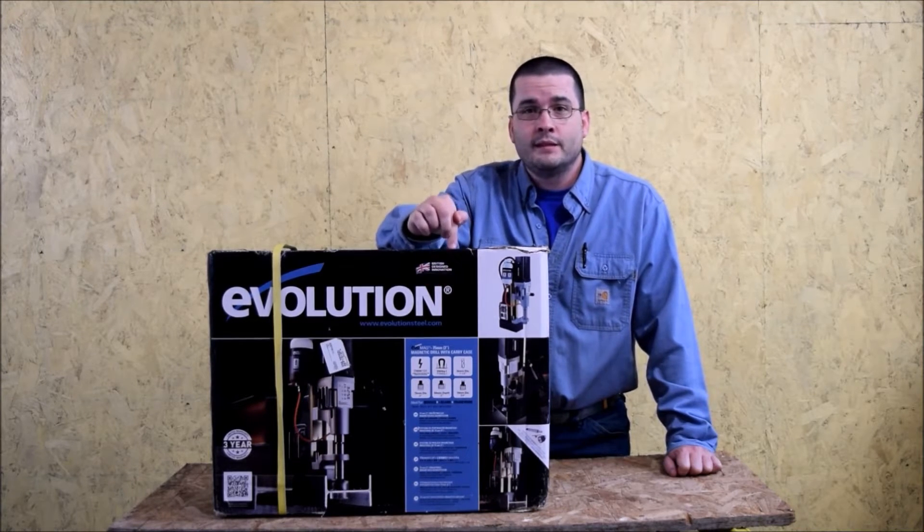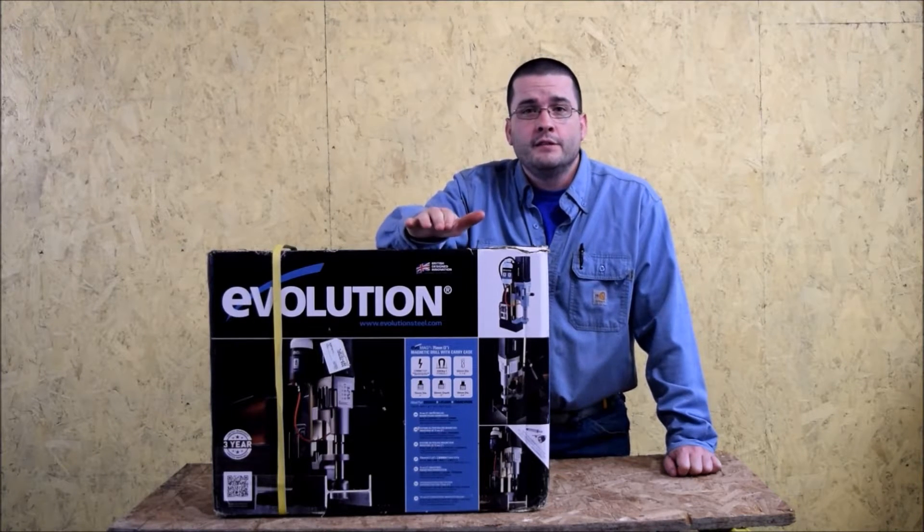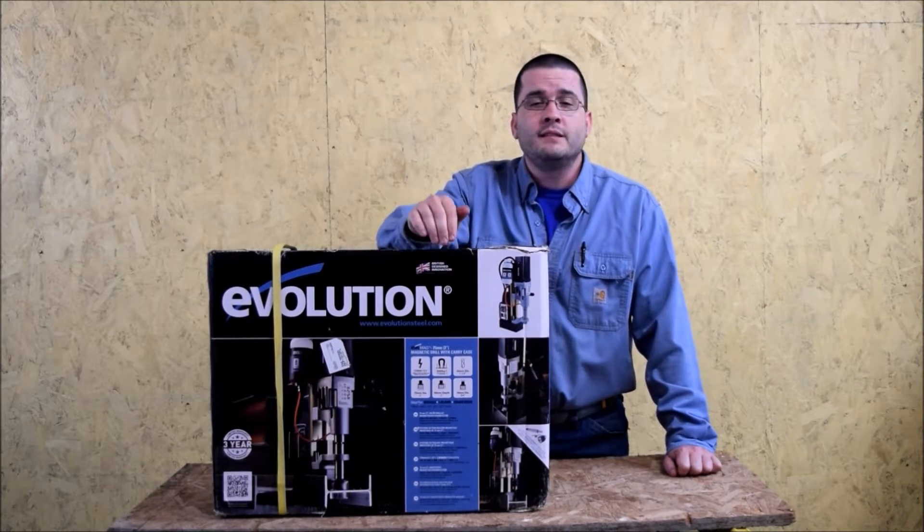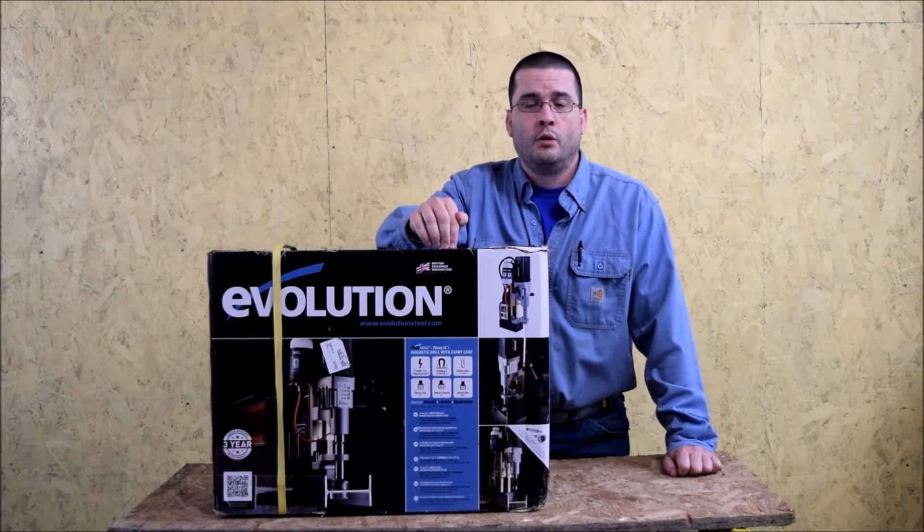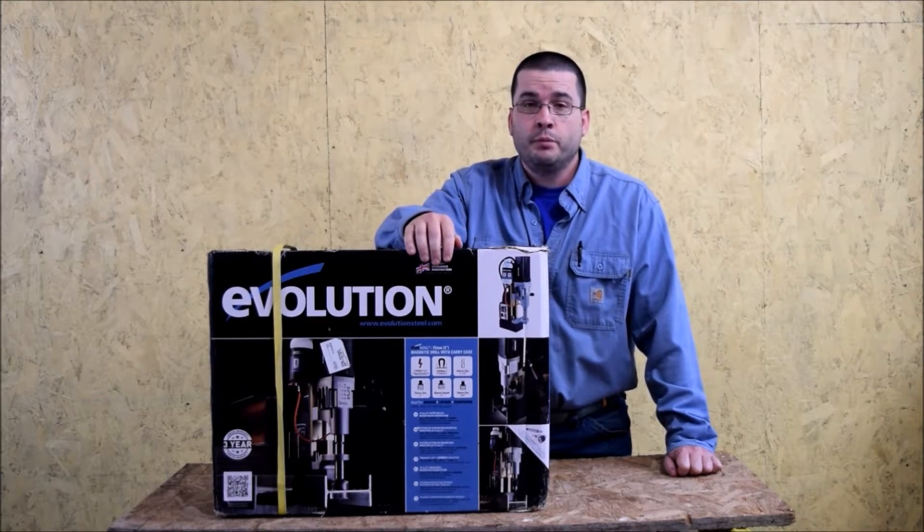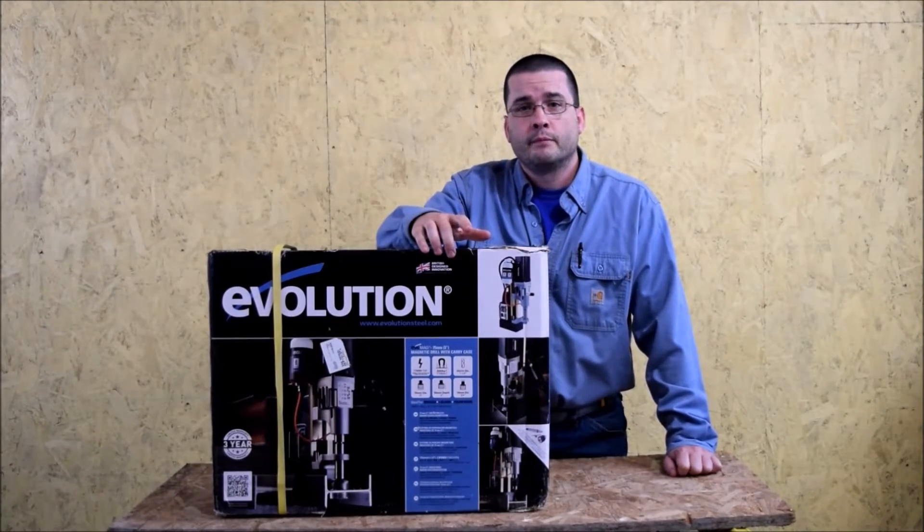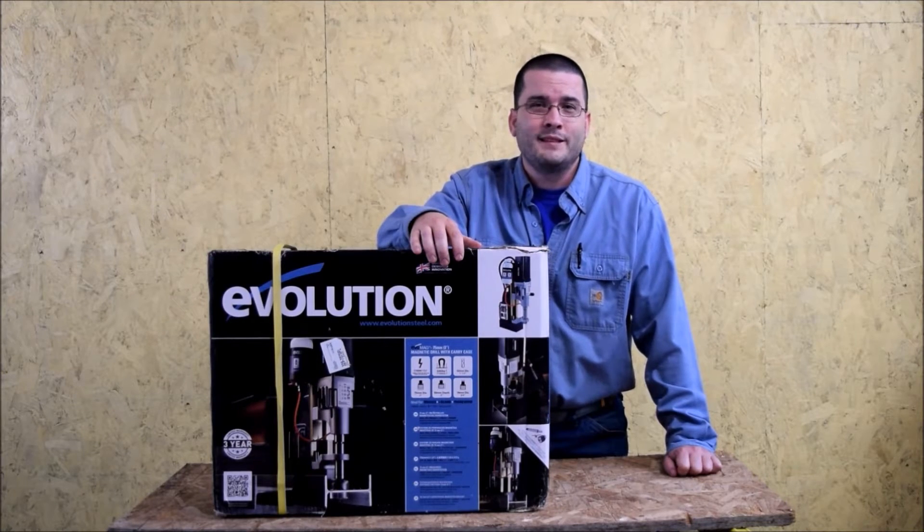They sent out this, the Evomag 75. Now this is a 75mm or 3 inch capable mag drill. What that means is this can drill up to a 3 inch diameter hole through 2 inches thick of steel. That's pretty powerful. So stick around, I'm going to take it out of the box, show you what you get, and I'm going to try and drill some holes in some pieces of steel. I'm going to try and put this thing up to a little challenge to see how well it performs.